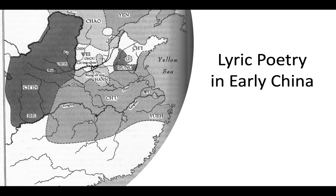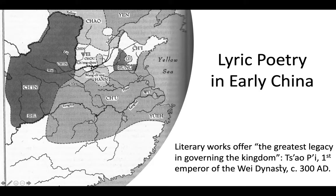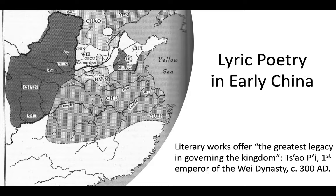Let's talk about lyric poetry in China. Primarily, if we're talking about the Book of Odes, we're discussing the Zhou dynasty. This quote is from Cao Pi, the first emperor of the Wei dynasty, 300 AD. He says that literary works offer the greatest legacy in governing the kingdom. This gives us a lot of information about how much poetry is revered in ancient China — it was viewed as a way of organizing society and legitimizing the governing body.